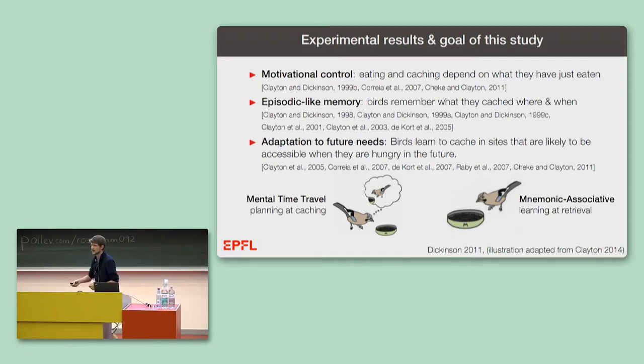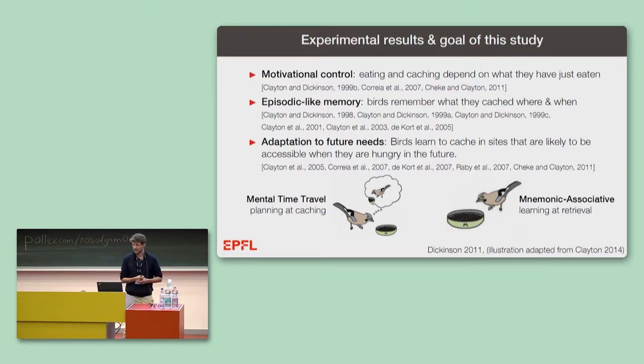Or that they look ahead and think, ah, tomorrow morning I will be again nearby this place, so I will be hungry, so I better cache something that I would like to have for breakfast tomorrow morning. On the other hand, there has also been a simple mnemonic associative account to explain at least part of these experiments, where the result of these experiments would be just a consequence of a simple learning mechanism at the time of retrieval.